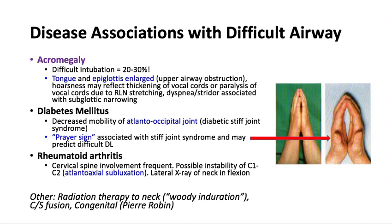Diseases associated with difficult airway: acromegaly was a keyword from last year. Difficult intubation occurs in about 20–30% of patients with acromegaly or gigantism due to high growth hormone levels. The tongue and epiglottis are enlarged, they can have upper airway obstruction, hoarseness from thickened vocal cords, paralyzed vocal cords from recurrent laryngeal nerve stretching, and subglottic narrowing. If someone has gigantism or acromegaly, there is a very high chance of difficult intubation and potentially difficult ventilation.